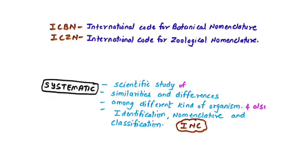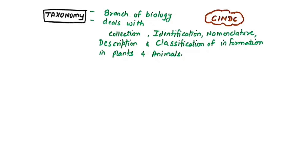Using the example of a library: when books are systematically placed, you first identify where a book will be, then name the book to the librarian (nomenclature), and then receive the exact location — for example, fourth shelf, fifth book (classification). Systematics means placing everything so it can be retrieved whenever needed. Systematics — INC: Identification, Nomenclature, and Classification — is called taxonomy.